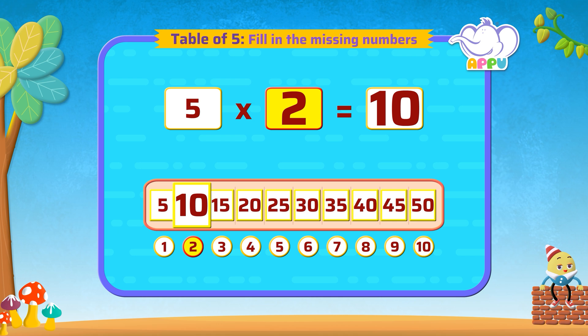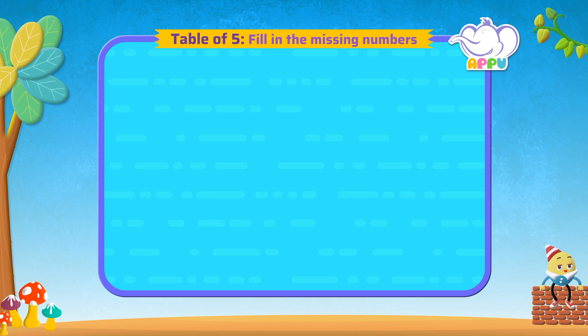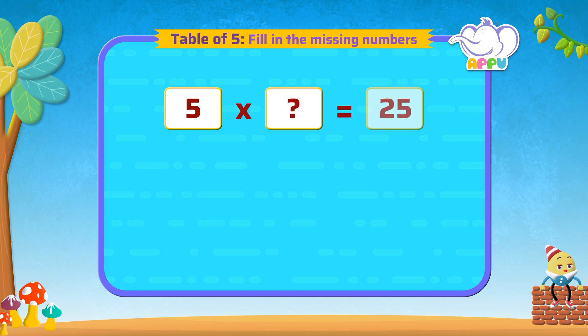Five multiplied by a number is 25. What is the missing number?